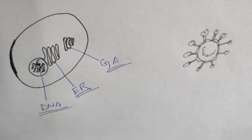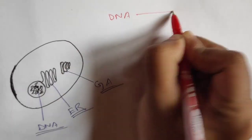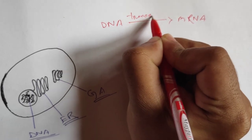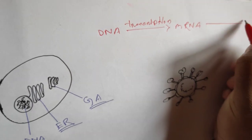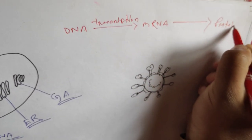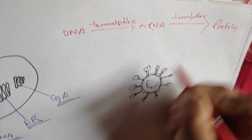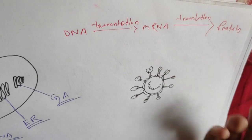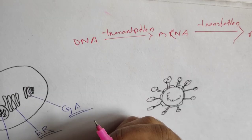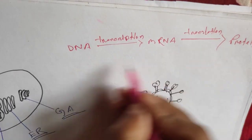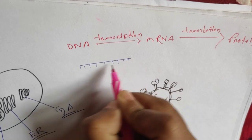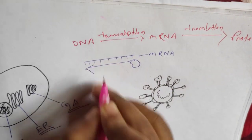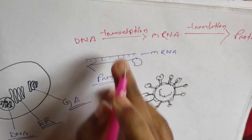Generally, in our cell, what happens is the DNA converts into mRNA — messenger RNA — by the process of transcription. Then this mRNA is translated into protein by the process of translation. In this case, from mRNA to protein, the ribosome helps. What the ribosome does here is read the single positive-strand mRNA, collect all the information, and make protein.